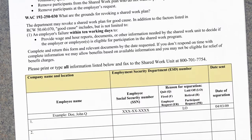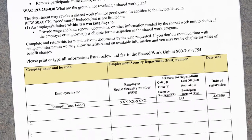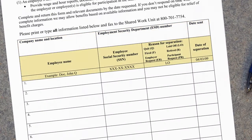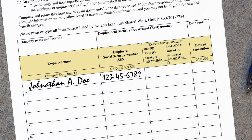Be sure to fill out this section including your company name, your ESD number, and the date you are completing the form. Make sure the participant's name on this form matches the way that you entered it when they joined the program. Enter their social security number for verification.